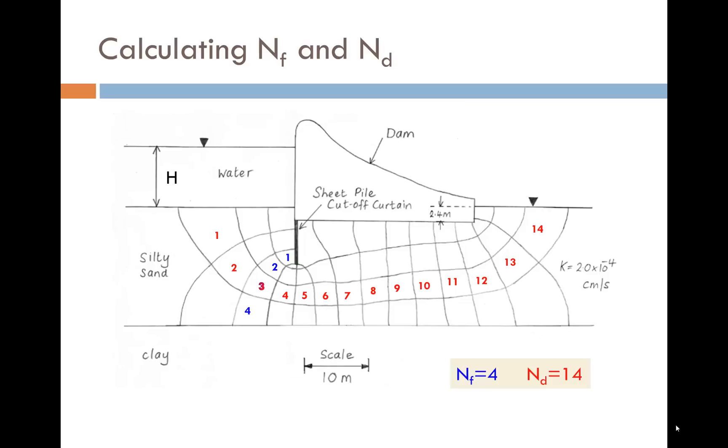In our earlier example, you can count the number of flow channels, NF, to be 4, and the number of equipotential drops, ND, to be 14. Bear in mind that it's the number of channels that you should count, and not the number of lines.